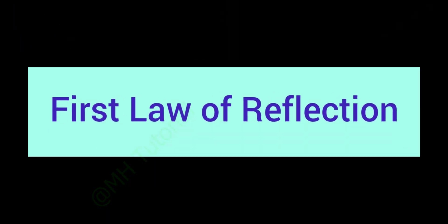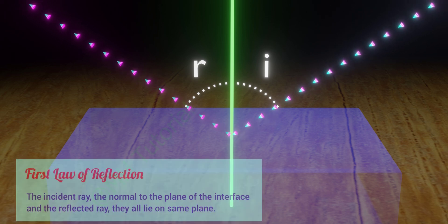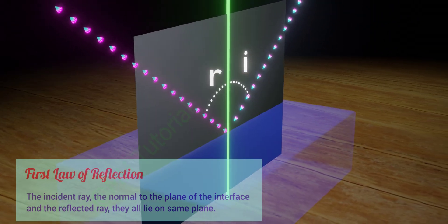Now, let's see the first law of reflection. It says the incident ray, the normal to the plane of the interface, and the reflected ray, they all lie on same plane.